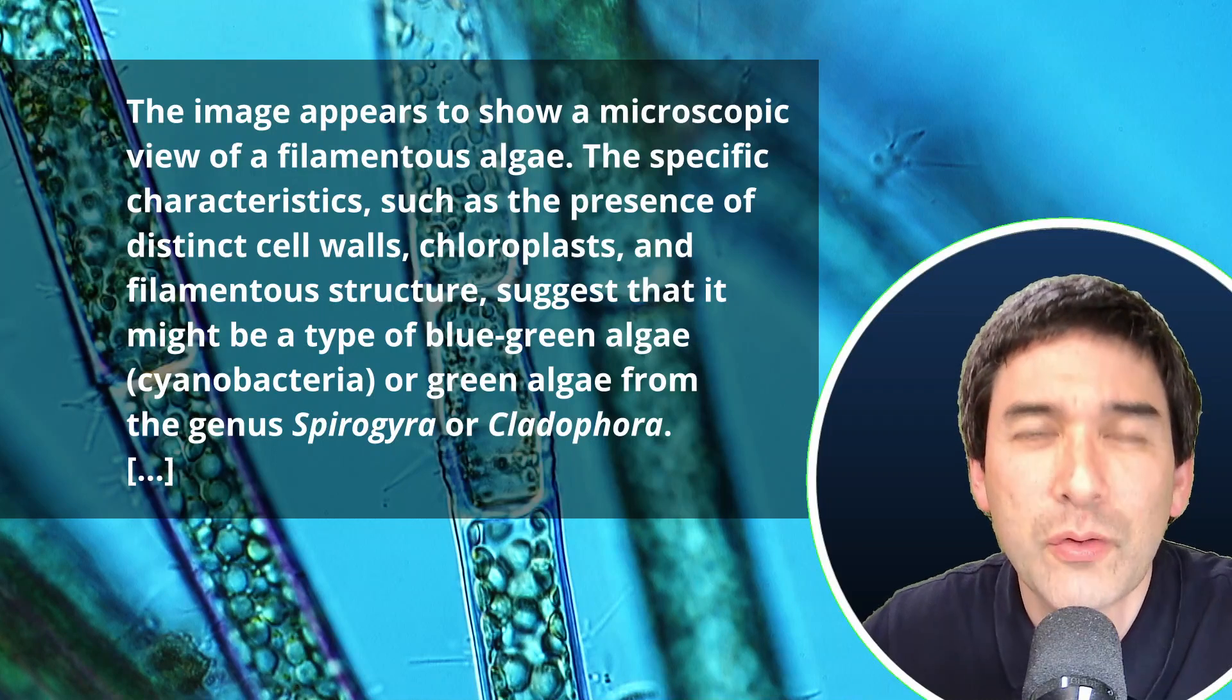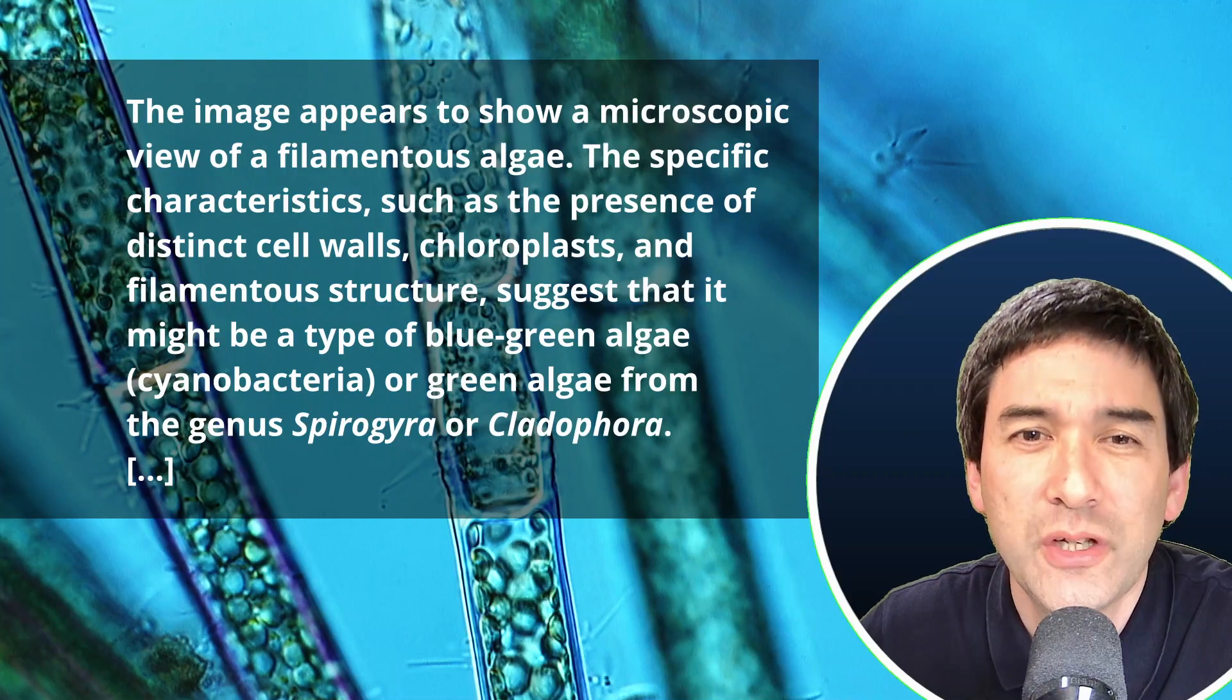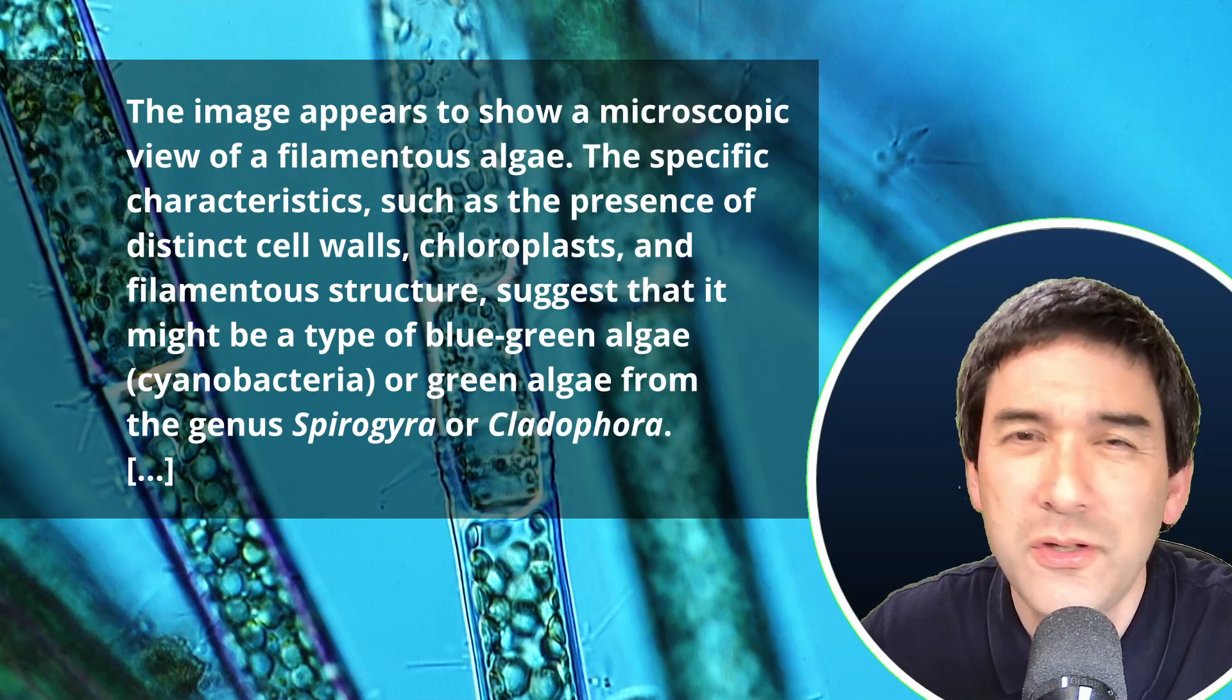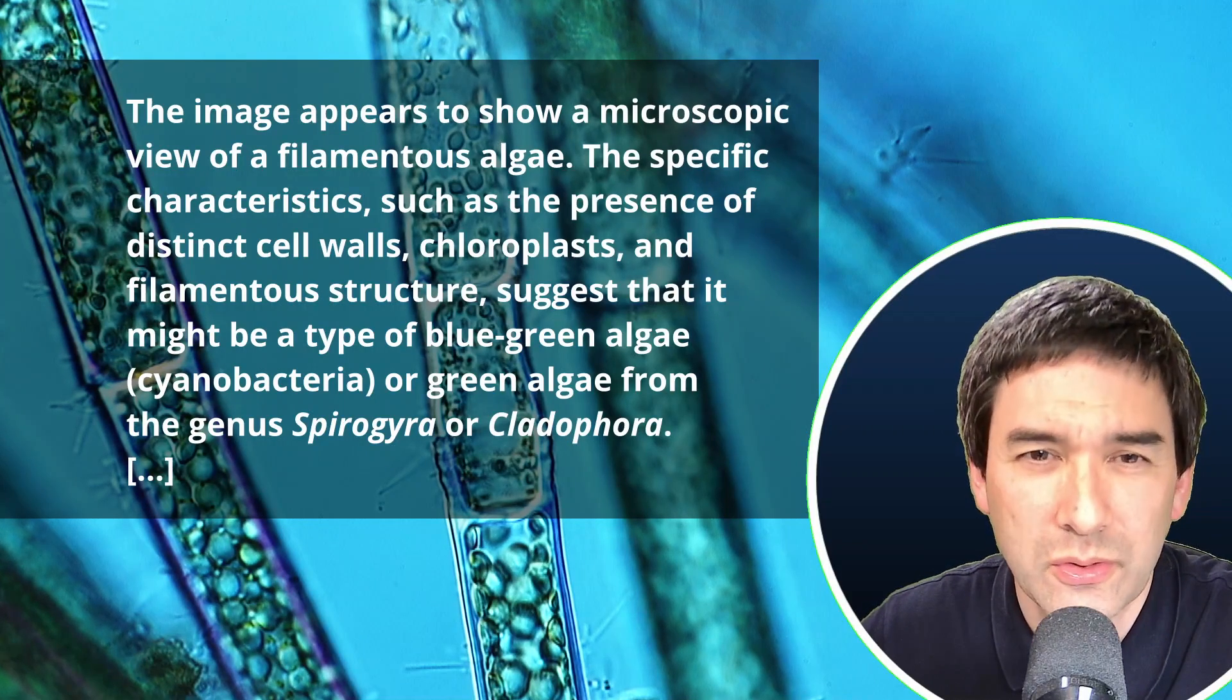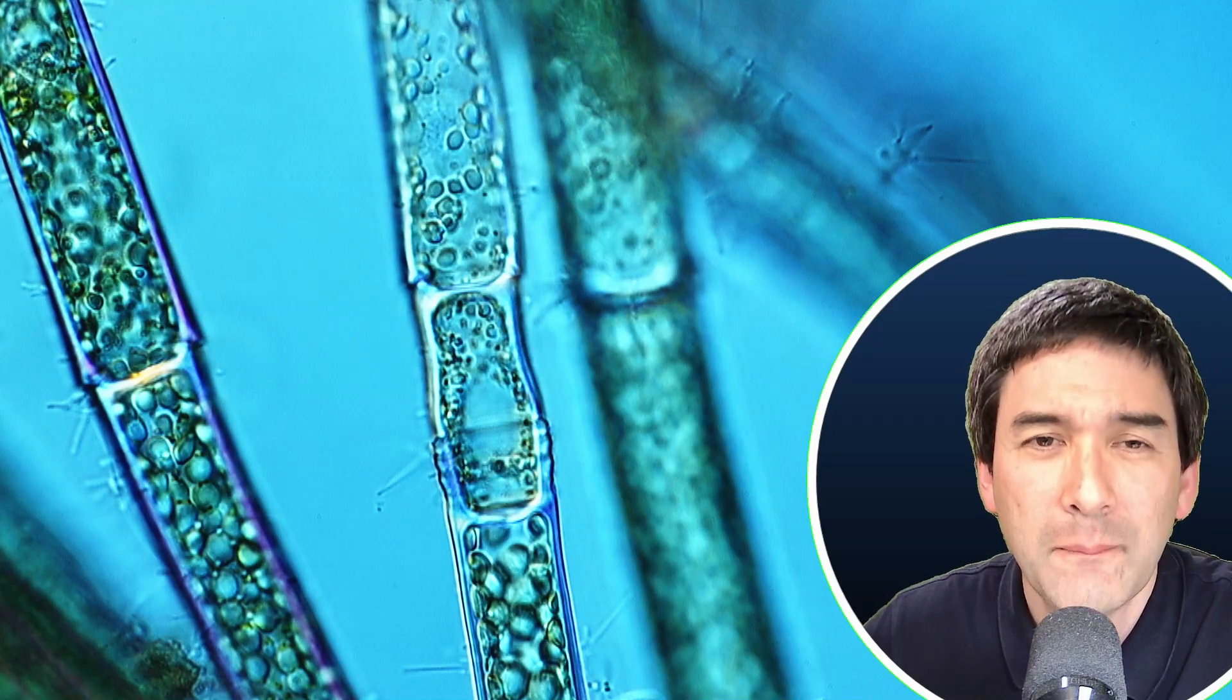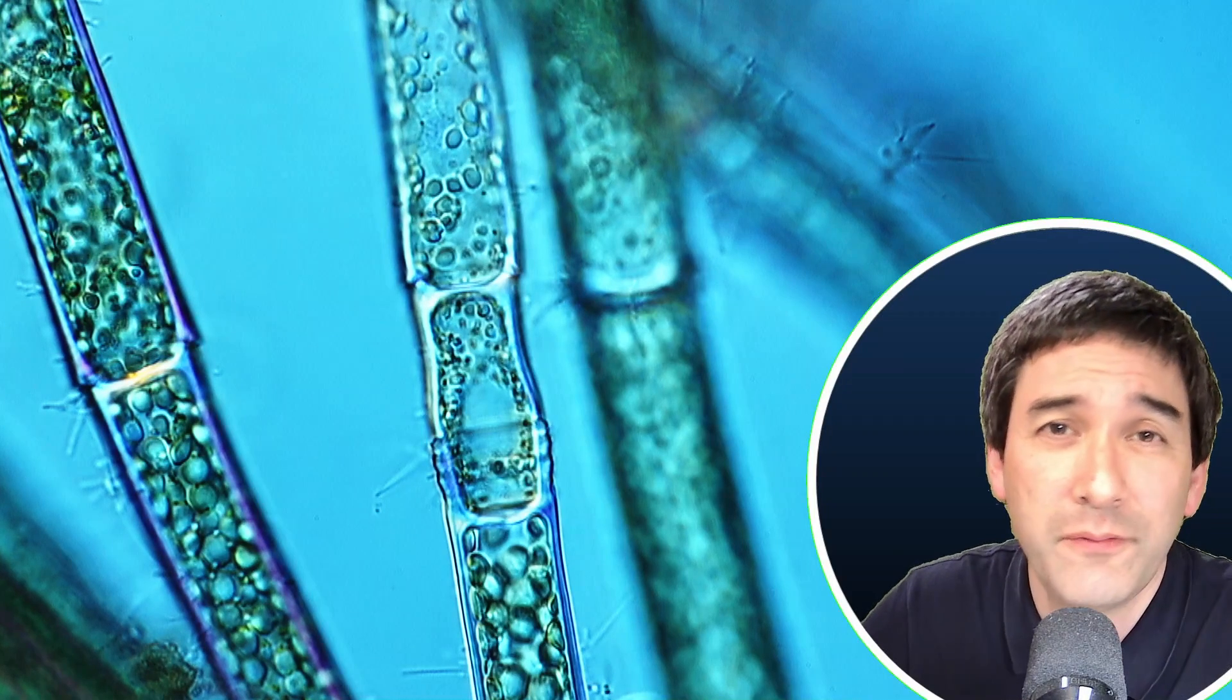So the description that it gives, like the filamentous structure and the chloroplasts and so on, is very generic. And honestly, chloroplasts can be found in eukaryotes and not in cyanobacteria. So it's also factually not quite correct here either. But it was not able to completely identify it using a picture, but it was able to identify it as some kind of a filamentous algae. So we see that picture identification is also not quite well developed yet.